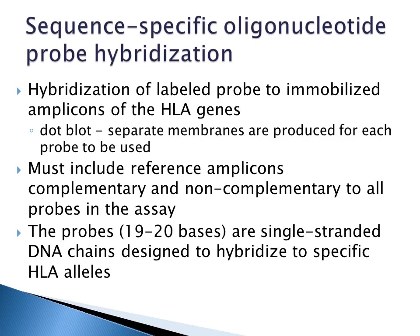In sequence-specific oligonucleotide probe hybridization, you have hybridization of labeled probe to immobilized amplicons of the HLA genes, and this is done as a dot blot. Separate membranes are produced for each probe to be used, and every membrane should include reference amplicons that are both complementary and non-complementary to all probes in the assay. The probes are very short — 19 to 20 bases — that are single-stranded DNA chains designed to hybridize to specific HLA alleles.